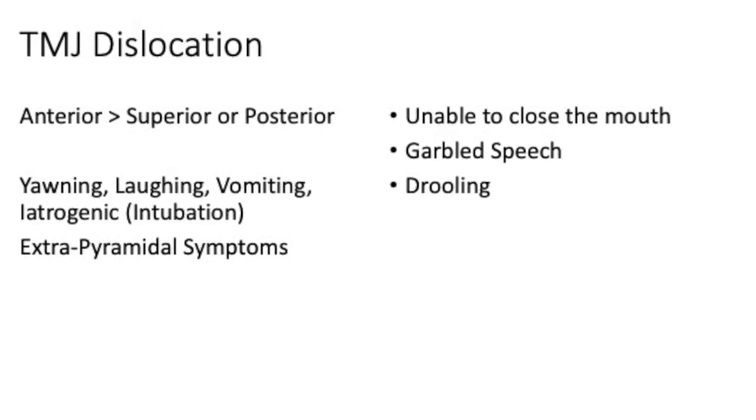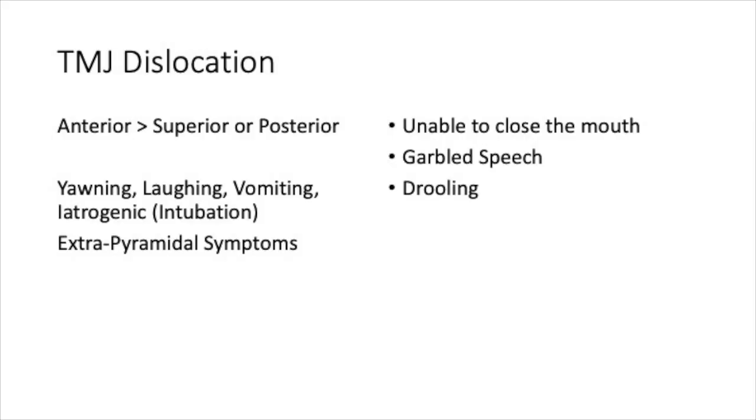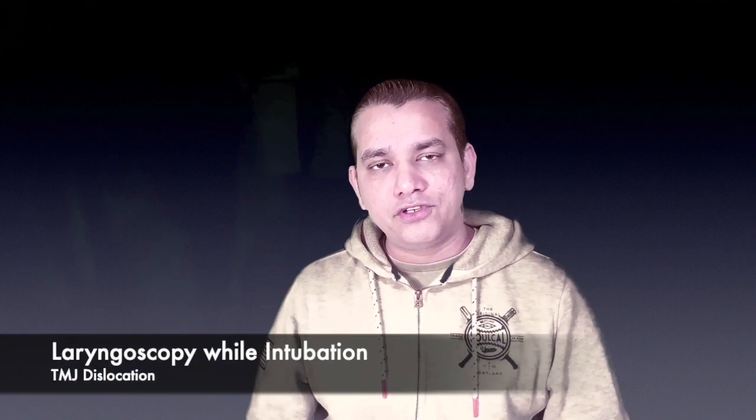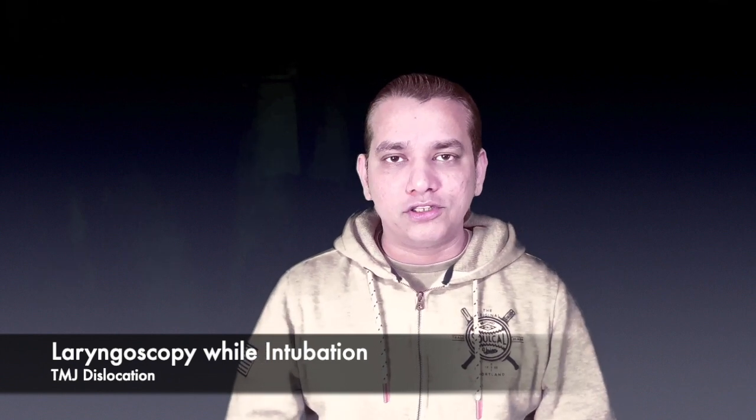Let us move ahead with temporomandibular joint dislocation. There are three types: anterior, posterior, and superior. The patient will come with a history of yawning, laughing, or vomiting, and they cannot close their open mouth. The patient presents with an open mouth, unable to close it, with garbled speech and sometimes drooling. TMJ dislocation can also occur iatrogenically — for example, while intubating or performing laryngoscopy if excessive pressure is exerted on the jaw.